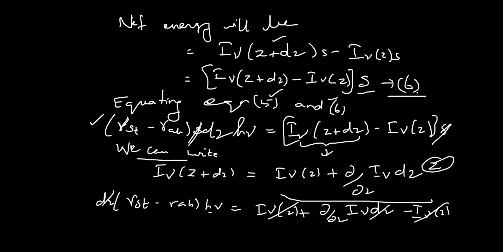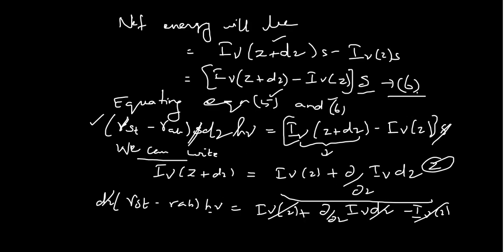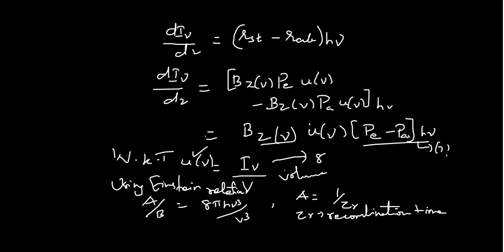Finally, we obtain: dI_ν/dz = (R_st − R_abs) · hν. Substituting the known expressions for R_st and R_abs from equations 1 and 2, taking common terms outside, we get: dI_ν/dz = B · Z(ν) · U(ν) · (P_e − P_A) · hν — equation 7. Here U(ν) is the energy density given by the energy irradiance divided by the velocity.